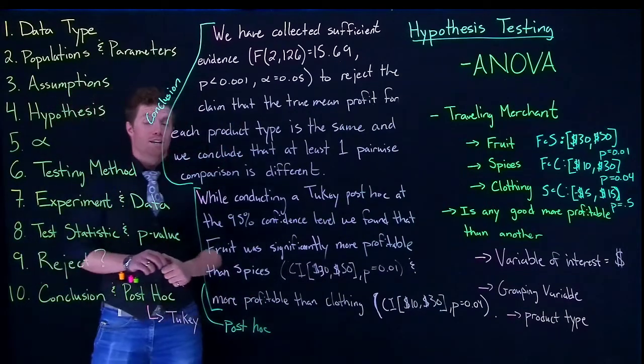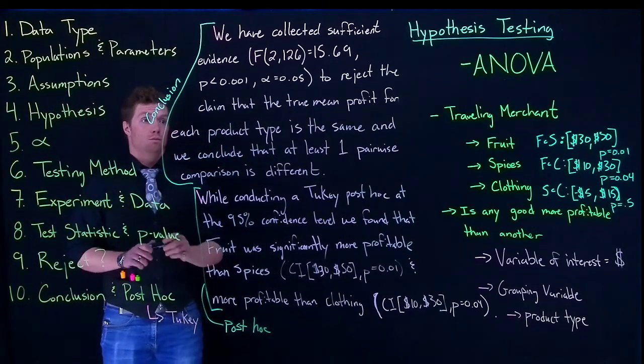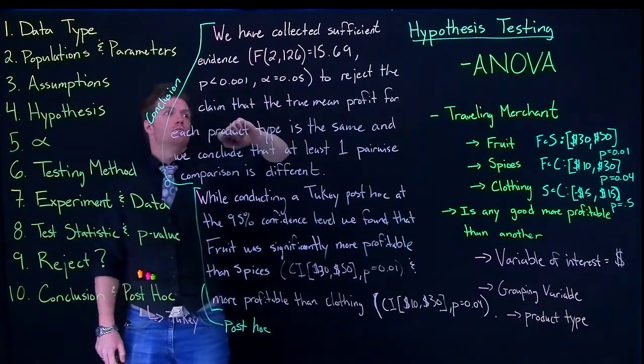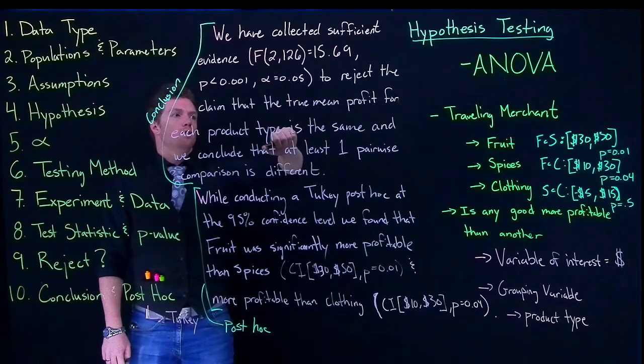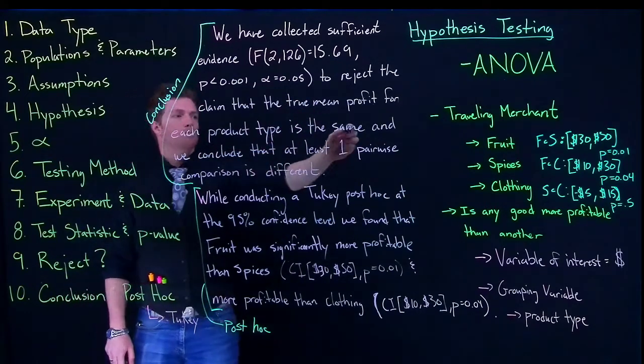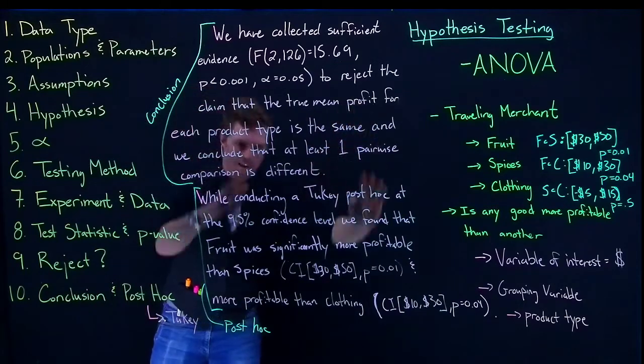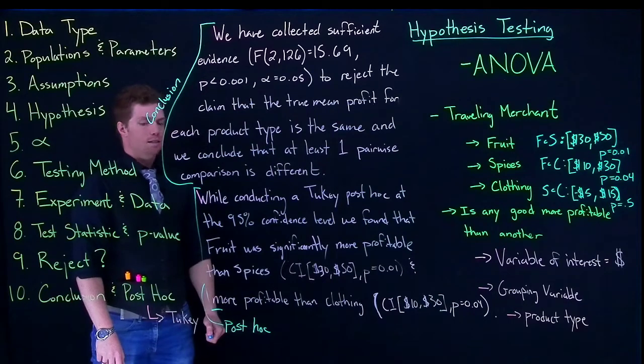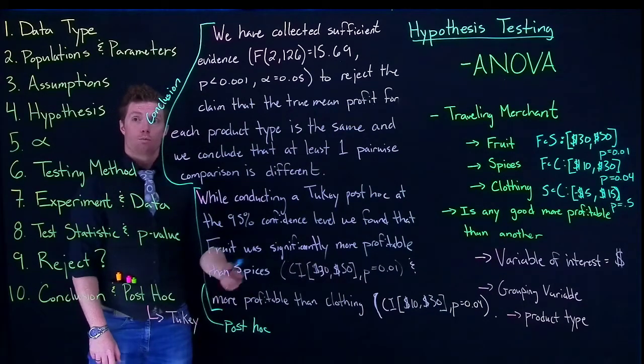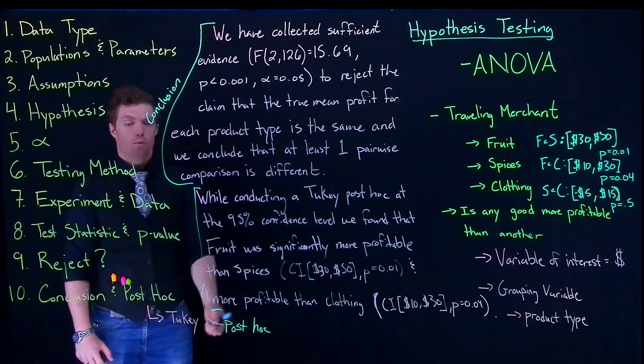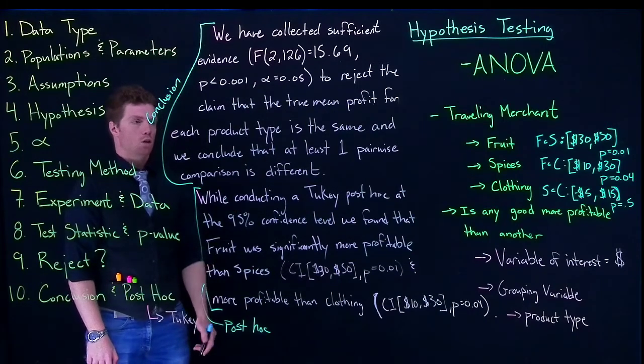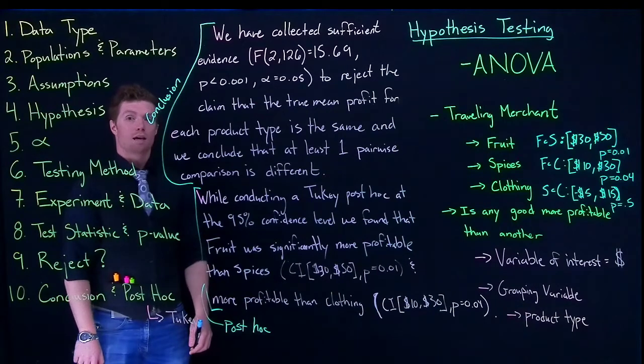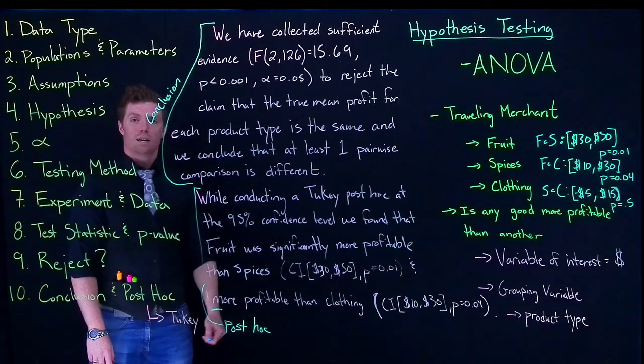Now if we did not find significant results we would just have said that we have collected insufficient evidence to reject the claim that the true mean profit from each product type is the same and we just put a period there and everything else we would eliminate. We would not need to include it in our report. So this is how we write out our conclusions and our post hocs to be able to communicate our results of our ANOVA analysis.